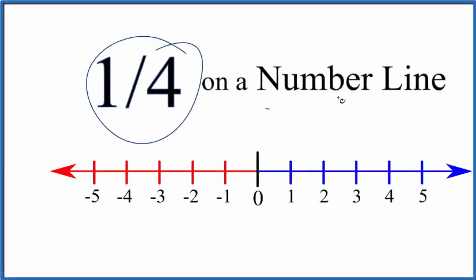Let's find one-fourth on a number line. So here's how we do it. The red, these are negative numbers. The blue are positive. That's zero right in the center.